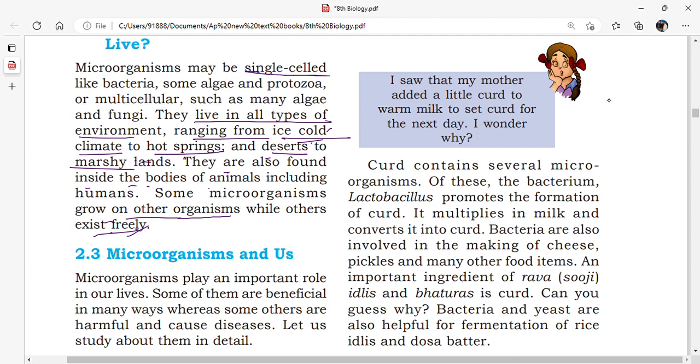Microorganisms may have only one cell, like bacteria, some algae, and protozoans. Microorganisms may also be single-celled or multicellular, such as many algae and fungi. Single-celled organism examples are bacteria, some algae, and protozoa. Multicellular organism examples are fungi and algae.